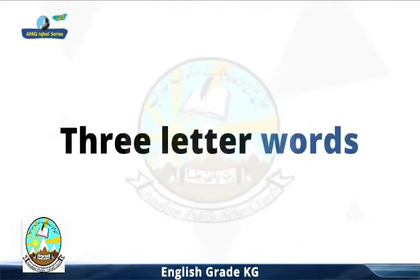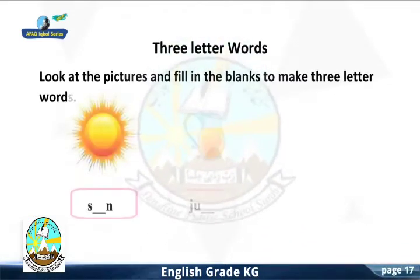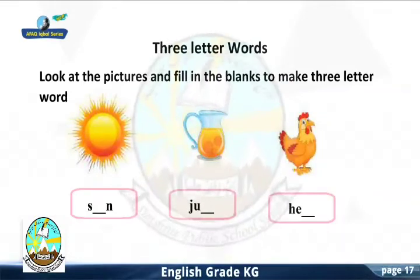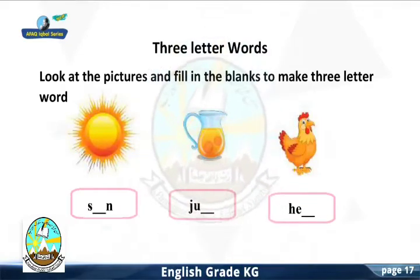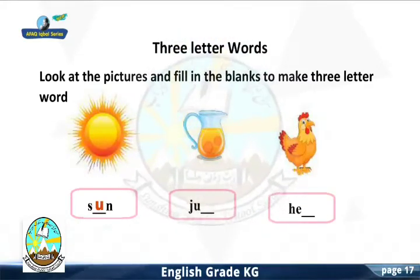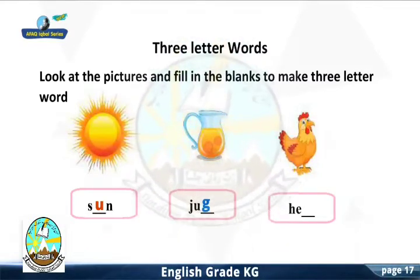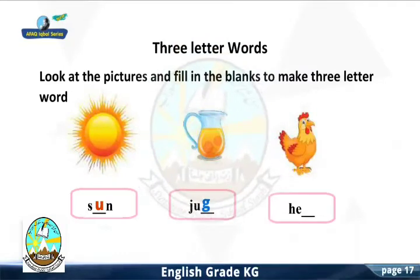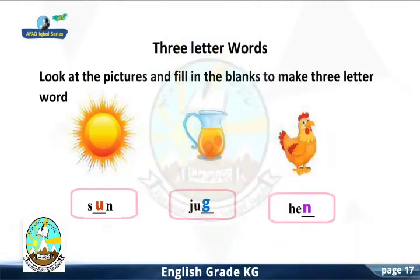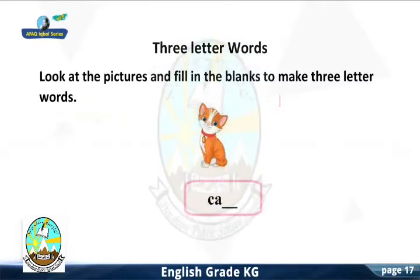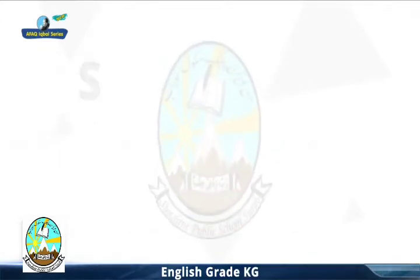Sheet 11 Topic: 3 Letter Words. Look at the pictures and fill in the blanks to make 3 letter words. S-U-N: Sun. J-U-G: Jug. H-E-N: Hen. J-A-M: Jam. C-A-T: Cat. Very good.